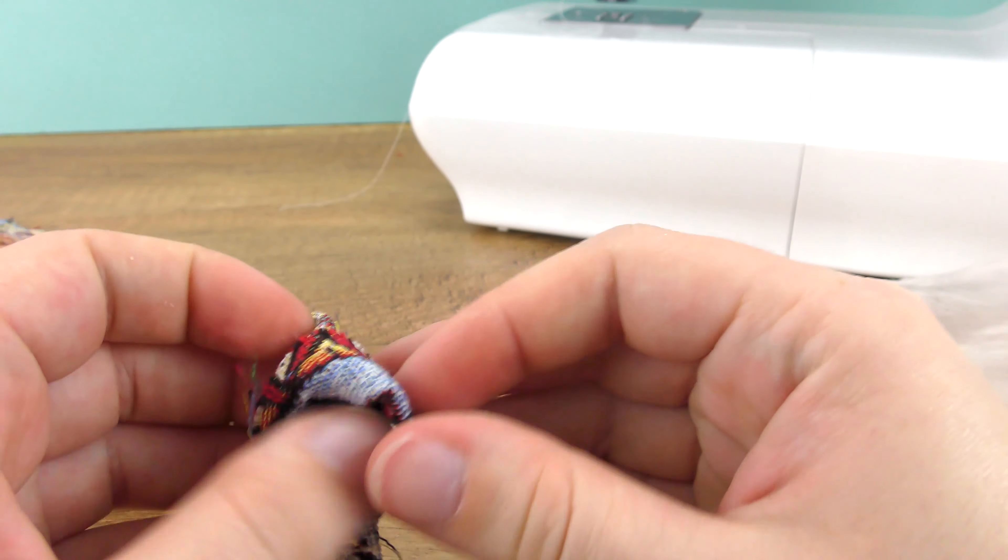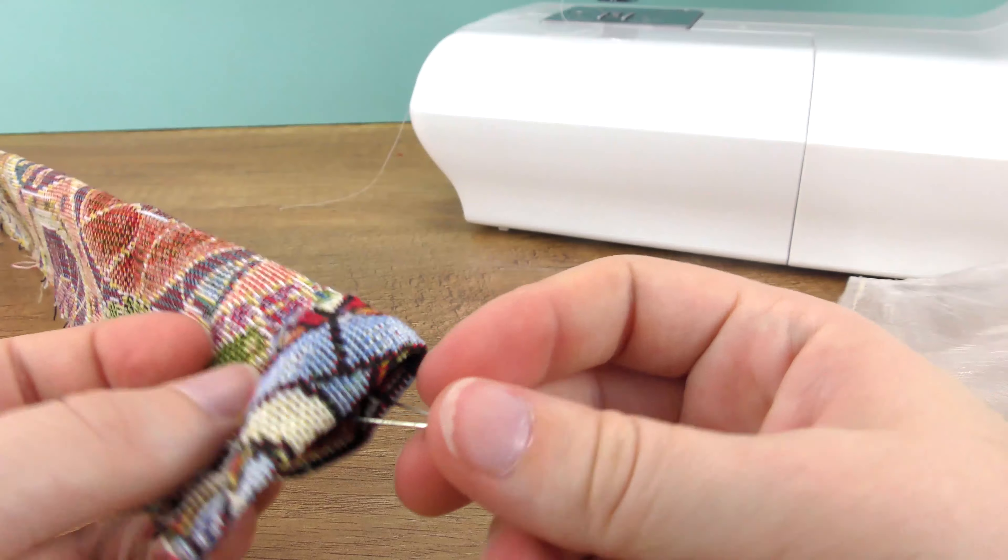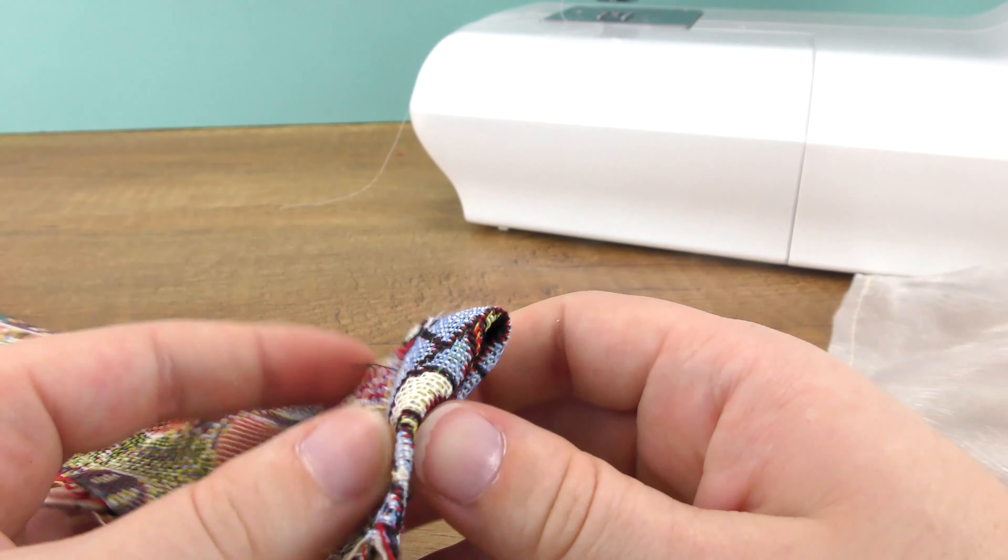Now turn your loop inside out with the help of a safety pin. It's easier if you use a bigger one if your material is a bit thicker like mine.